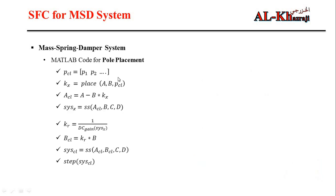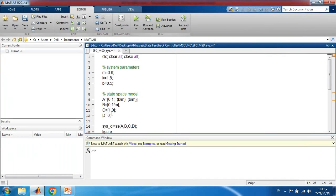In MATLAB, we first select the desired closed-loop pole locations, then use the `place` command to find the gain matrix Kx. We then compute the new closed-loop A matrix. For the tracking problem, we find the forward gain Kr using the DC gain command. Finally we apply a step input and compare the open-loop and closed-loop responses.